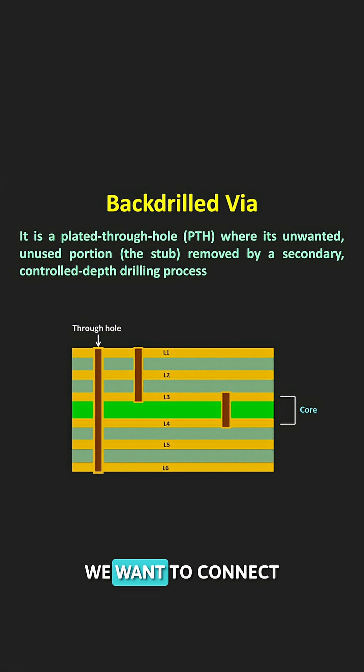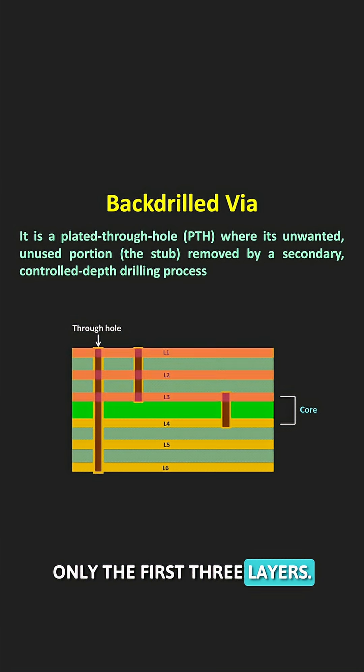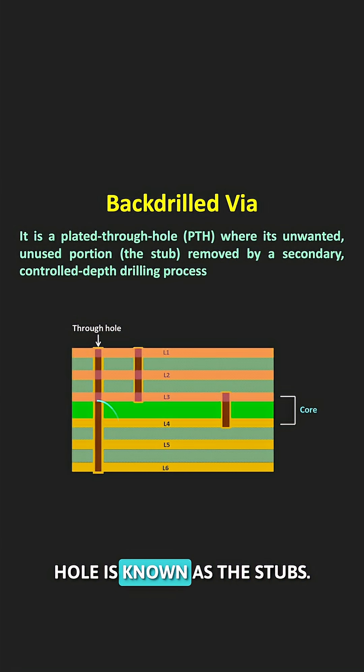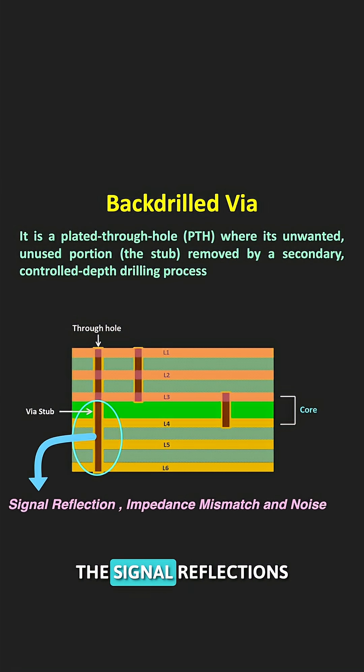Let's say we want to connect only the first three layers. In this case, the remaining unused and unwanted part of this through hole is known as the stub. This stub acts as an antenna and can cause signal reflections, impedance mismatch, and noise at high frequencies.